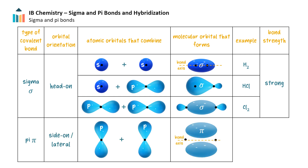In contrast, when there is lateral or sideways overlap of orbitals, this results in electron density above and below the bond axis. The bond which forms is called a pi bond, denoted by the Greek letter pi. Pi bonds restrict rotational movement, because breaking the sideways overlap requires energy.